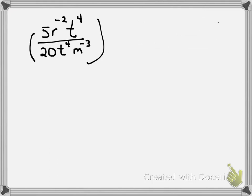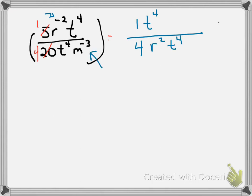First thing is I look at my fraction and I can reduce it — make it 1/4. So I'm going to rewrite this with a 1 there and a 4 there. I'm going to go through each exponent and write them where they're supposed to be. This R has a negative 2 — it's negative on top so I'm moving it to the bottom and now it's positive. The T is already positive on top so it will stay on top. The T on the bottom is also positive so it will stay.